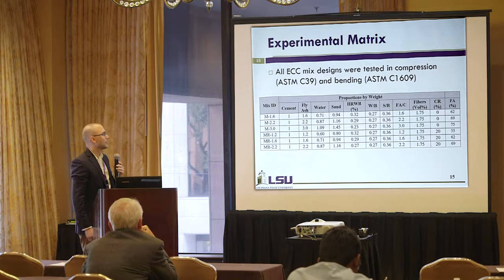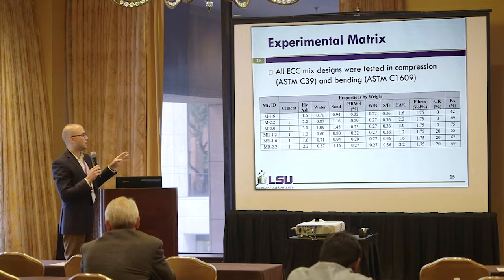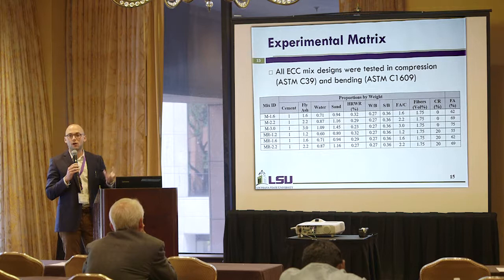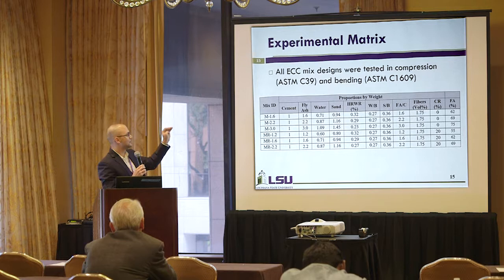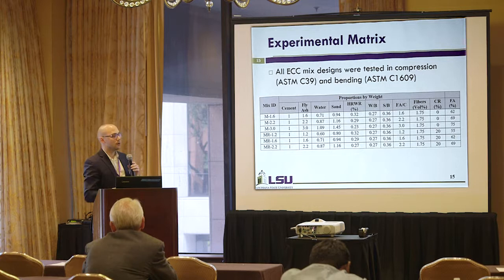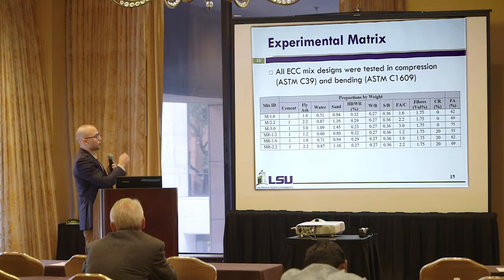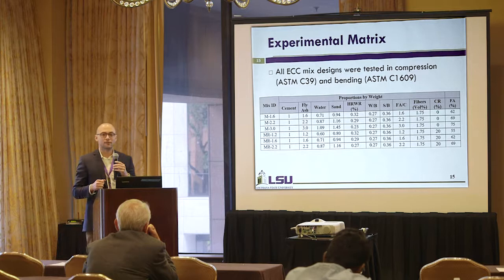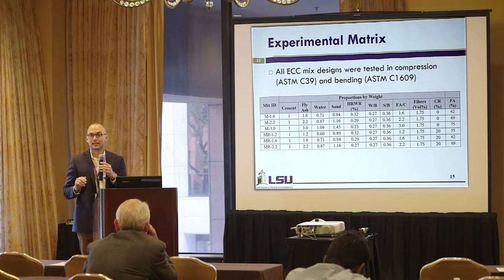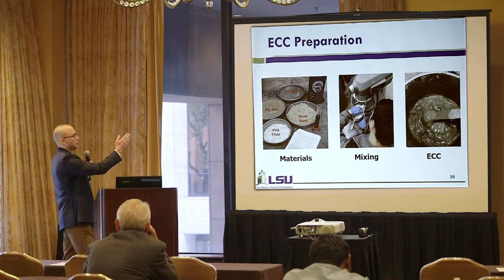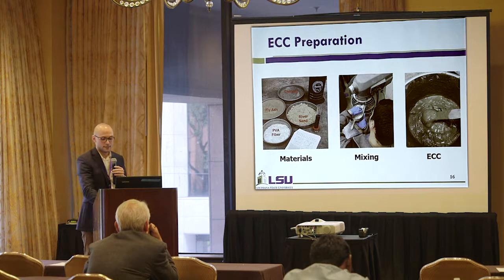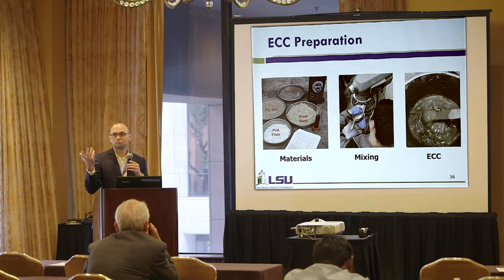The experimental matrix consisted of three mixes for two different series — a regular ECC series and a crumb rubber ECC series. Crumb rubber was added to some mixes because it helps reduce J-tip, the crack tip toughness, allowing for better ductility. For the regular ECC series, fly ash replacement of cement increased from 62% up to 75% by weight. For the crumb rubber series, fly ash replacement increased from 55% to 69% by weight. We also used two different types of locally available river sand — one coarser and cheaper than the other. Materials included PVA fiber, river sand, fly ash, and cement.